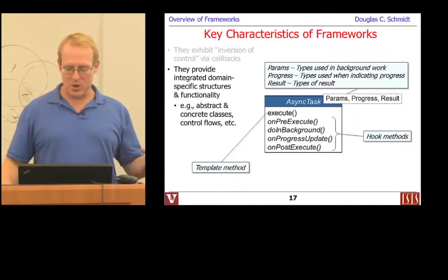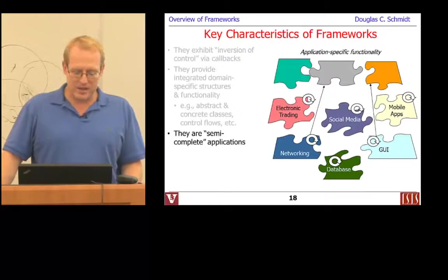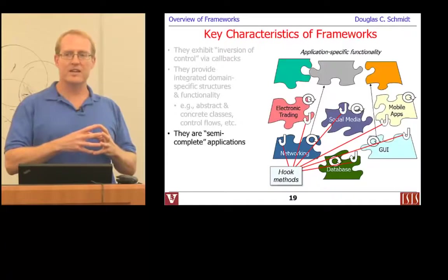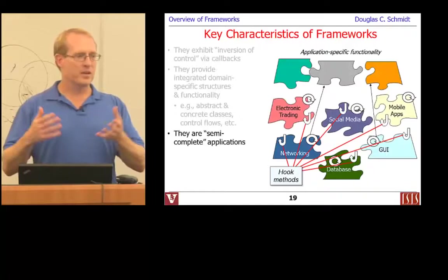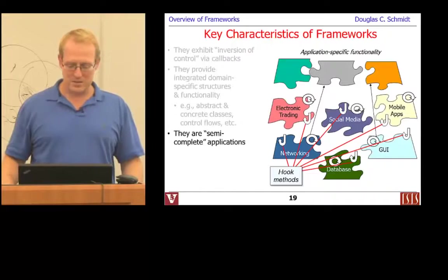AsyncTask is a great example of a framework — it's got inversion of control, it's domain-specific, customized for people who want to write applications that run in different threads in Android, and it's an example of the template method pattern. The last key defining characteristic of a framework is that they are so-called semi-complete applications, meaning they have certain hooks that can be customized to do specific things particular to the context, domain, or application that the framework designers couldn't have known about when they built it.